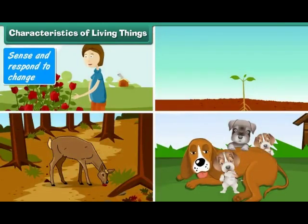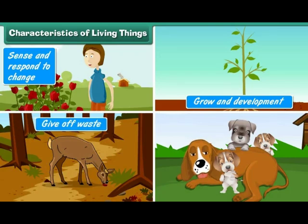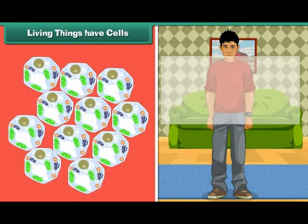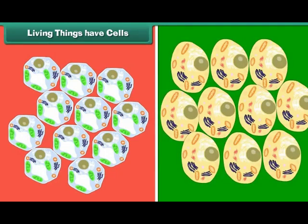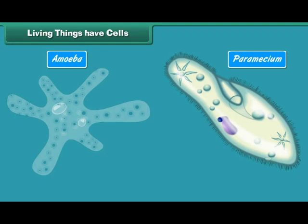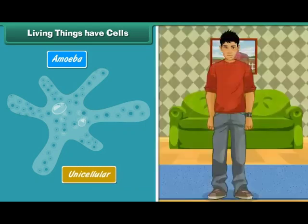Living organisms sense and respond to change, show growth and development, give off waste, and reproduce. Living things have cells. Each living being has a distinct individuality. The body of a living being is made of one or more cells. Cells are considered to be the structural and functional unit of life, made of protoplasm or living matter. Single-celled organisms like amoeba and paramecium are called unicellular, while organisms made up of many cells are called multicellular.